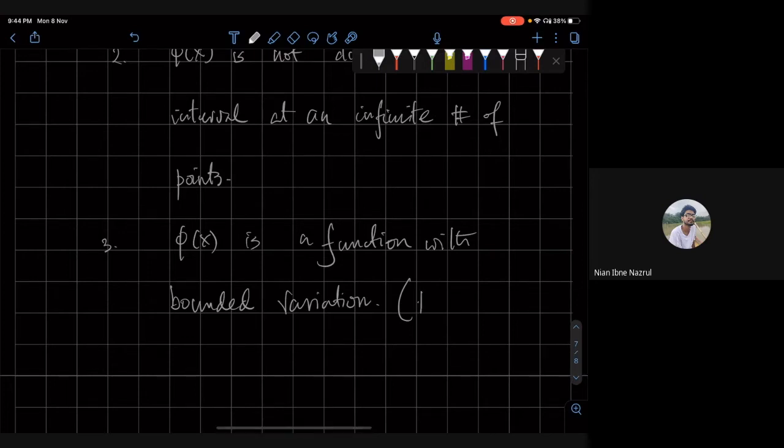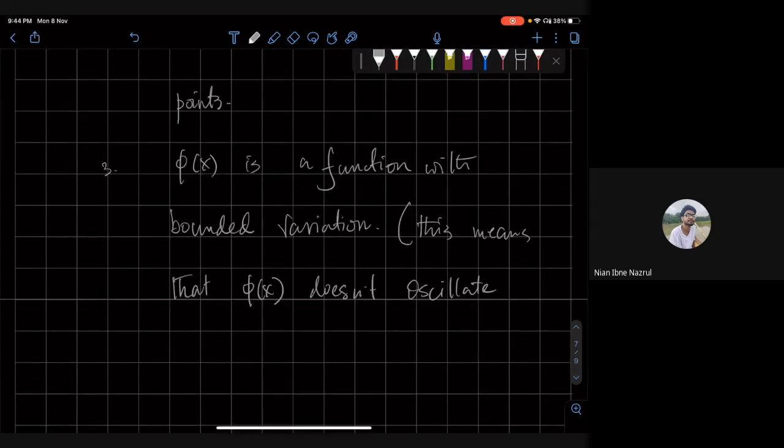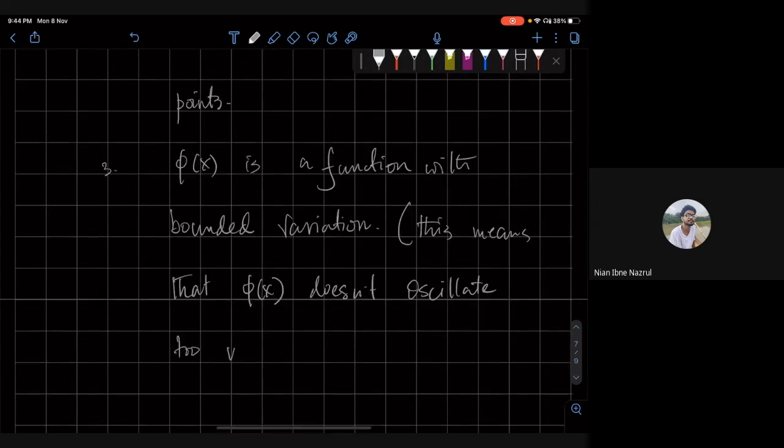Roughly this means that phi of x doesn't oscillate too much too often.